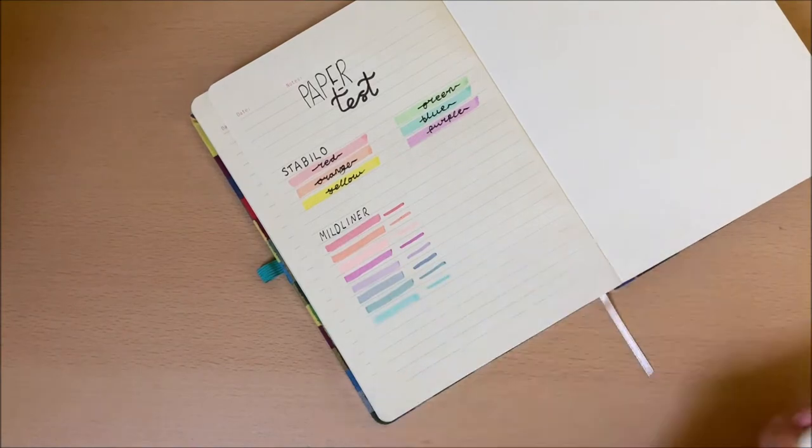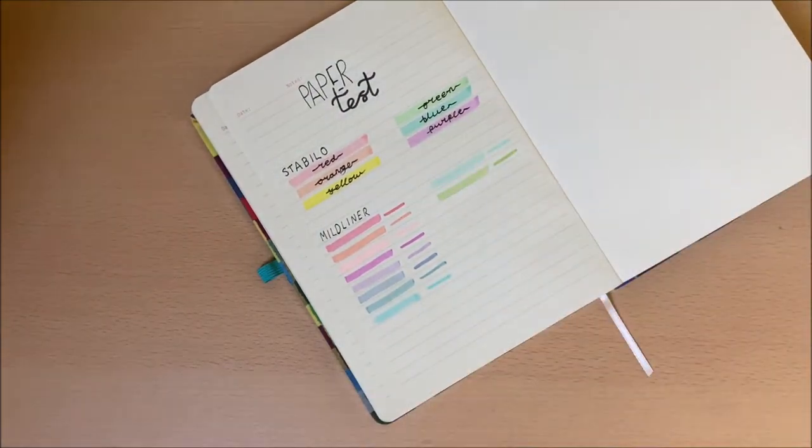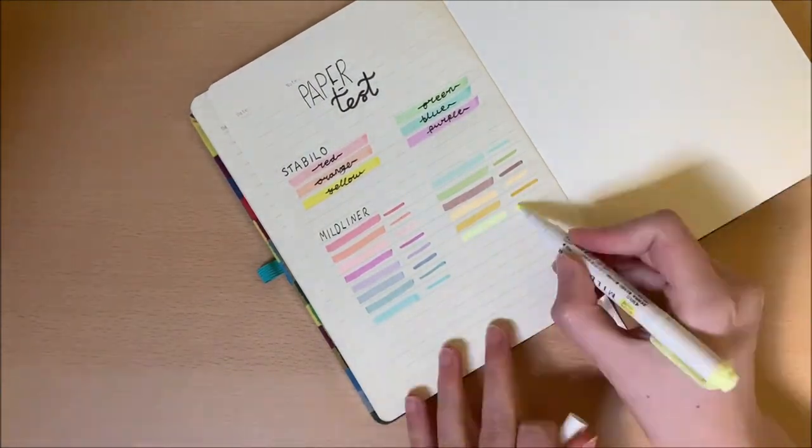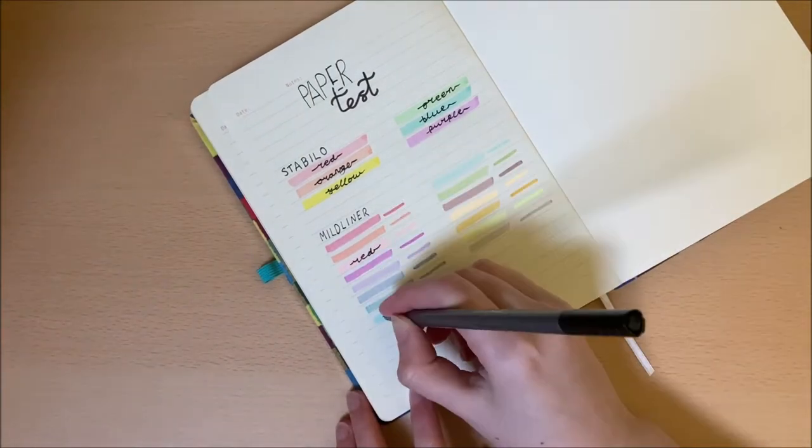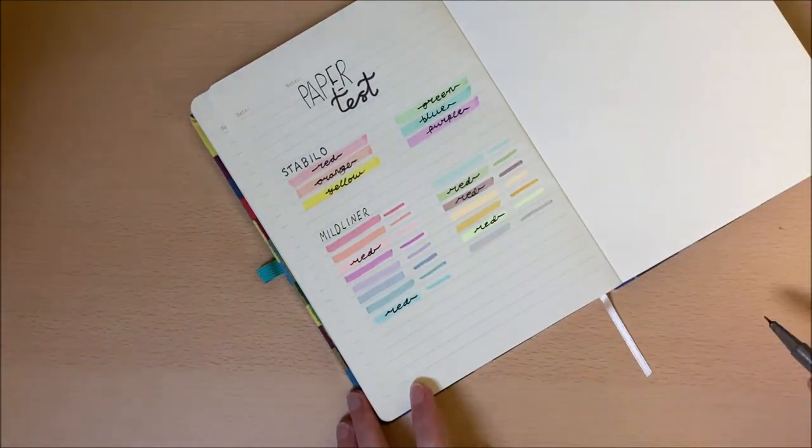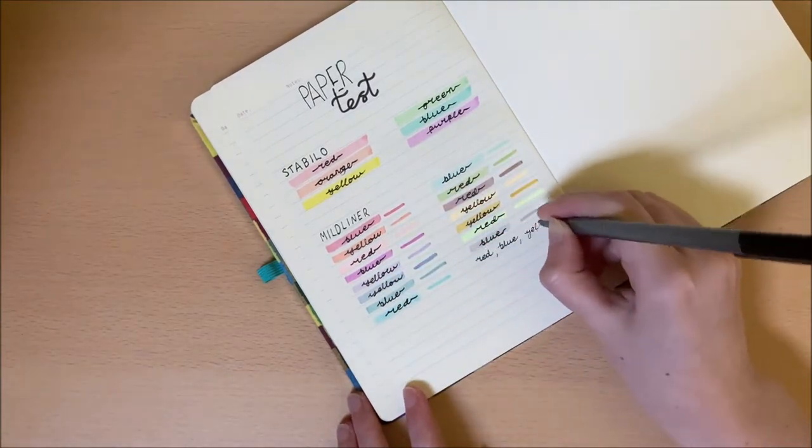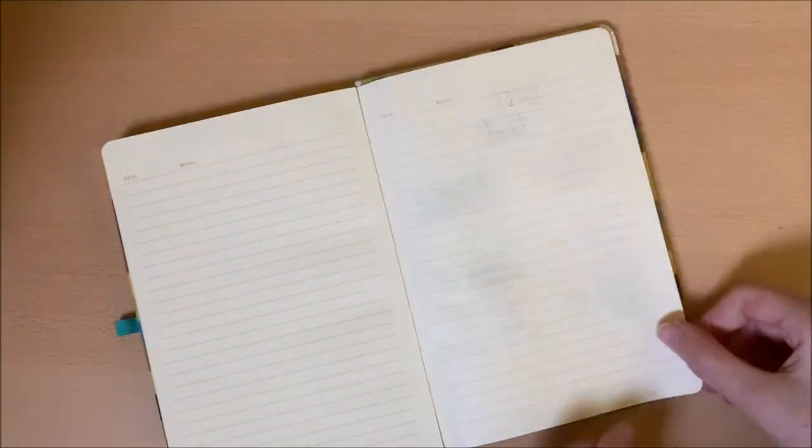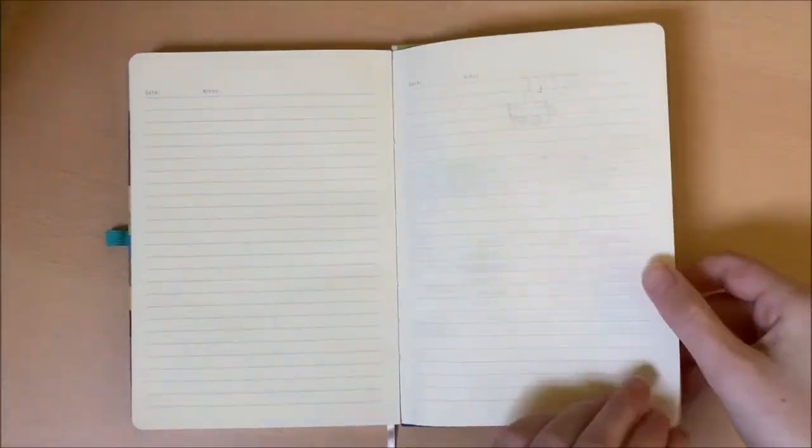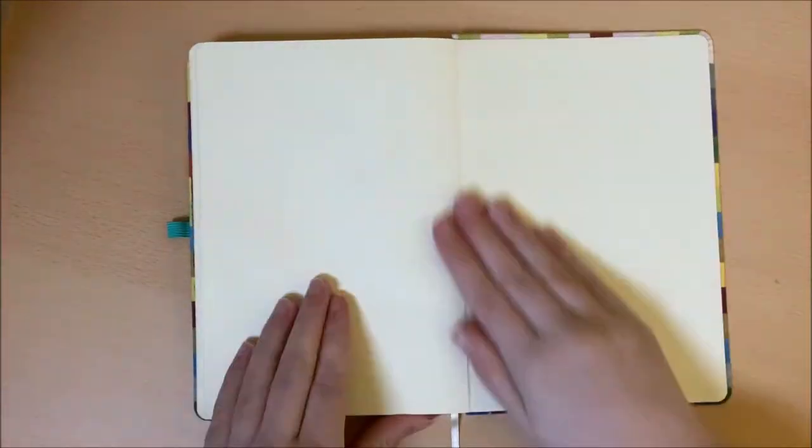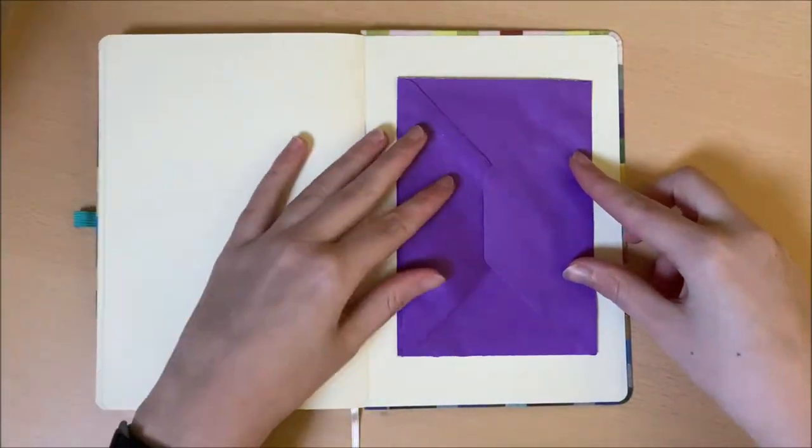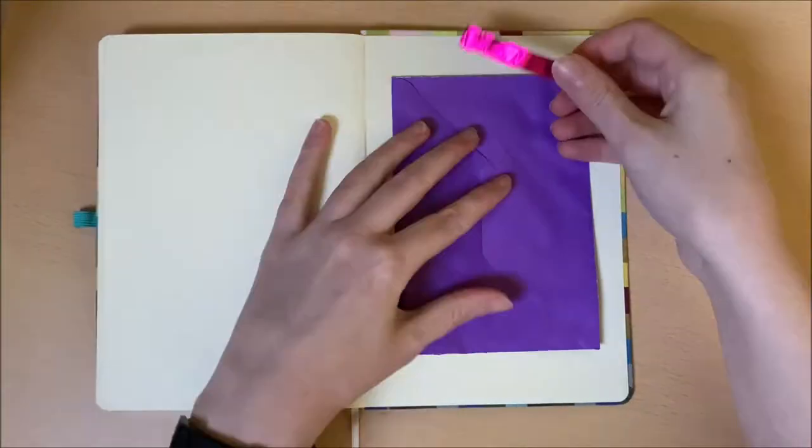It's also helpful to have a place where you can see what the highlighter looks like on your page instead of testing it out on an actual spread and finding out you hate it. So as you can see the Stabilo Pastels are hardly visible through the page but the Mildliners are. So because of this I'm going to be using the Stabilo Pastels for the rest of my spreads.